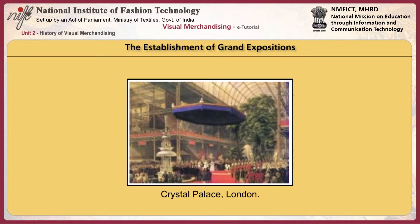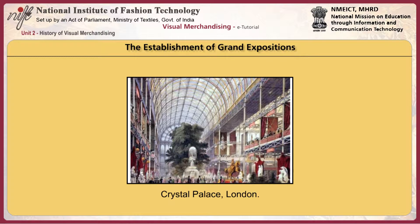The grand expositions, which began in London in 1851 with the Crystal Palace Exposition, were originally meant to present and demonstrate new technology. The expositions soon became exotic and elaborate settings for fairs. Retailers learned that it was strategic to display merchandise in the open and not to place objects directly on the floor, but rather on different platforms or pedestals, raising the merchandise closer to eye level.